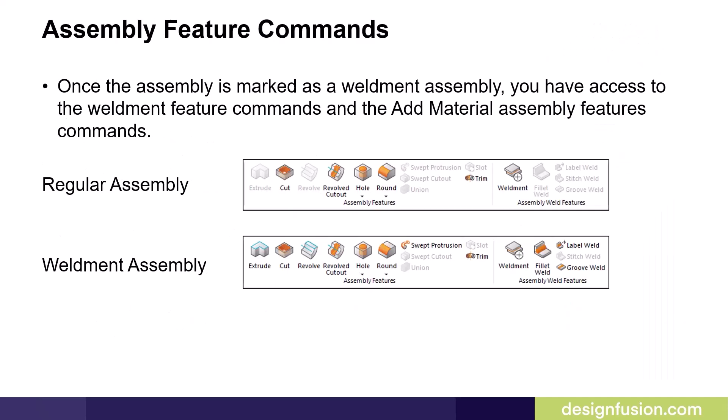Once the assembly is marked as a weldment assembly, you have access to the weldment feature commands and the add material assembly feature commands. This slide illustrates the difference between the assembly feature commands that are available in a regular assembly and in a weldment assembly.